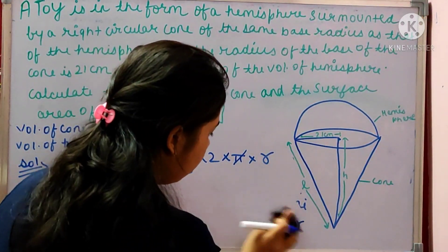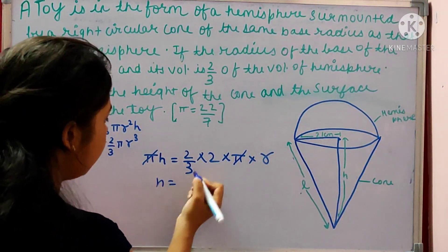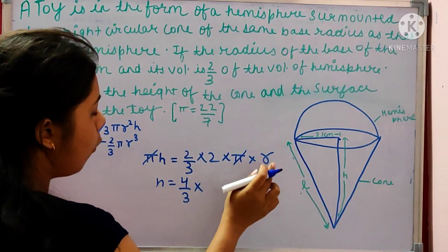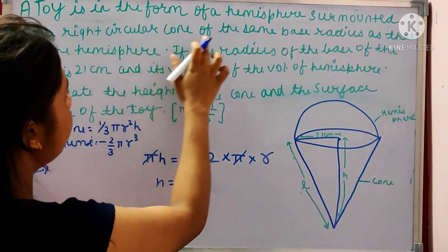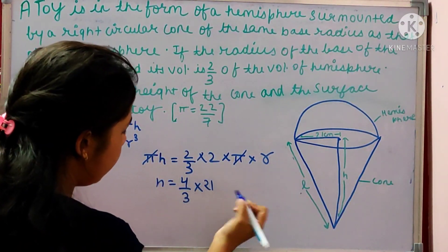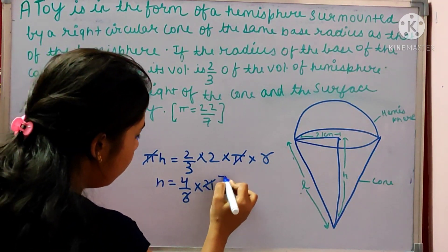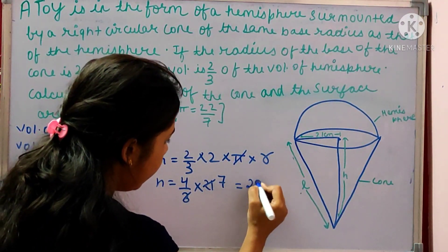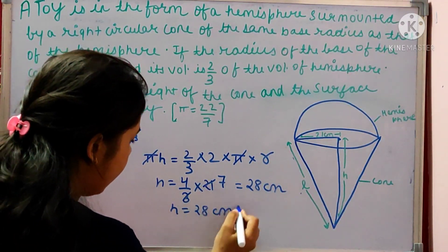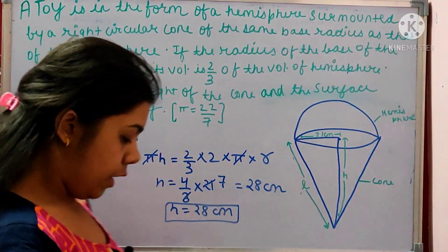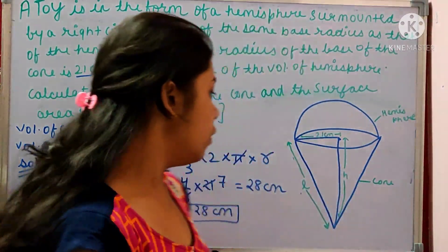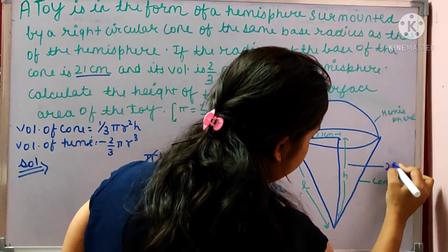The value of r is already given as 21 centimeter. So h equals 4 by 3 multiplied by 21, giving h equals 28 centimeter. Therefore, the height of the cone is 28 centimeter.